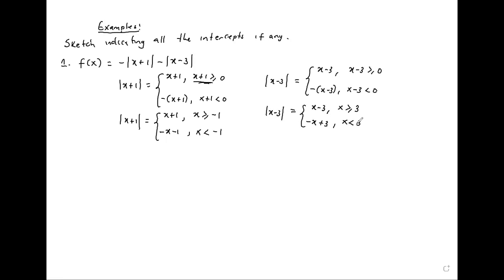We have two critical numbers: negative 1 and positive 3. In between, the interval is negative 1 less than or equal to x, and x less than 3. After 3, the interval is x greater or equal to 3. Before negative 1, the interval is x less than negative 1.